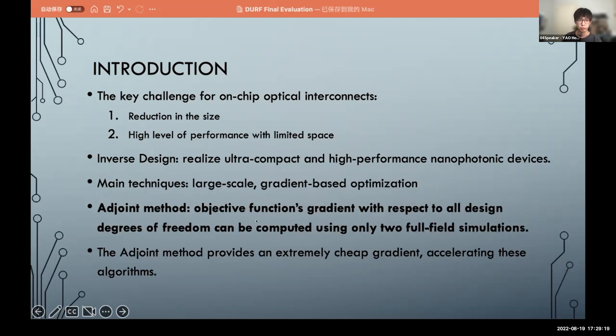And what we will do is to use the adjoint method to solve this problem. It can get the whole gradient of the design region just using only two simulations, so it provides an extremely cheap gradient and it can accelerate the algorithms.